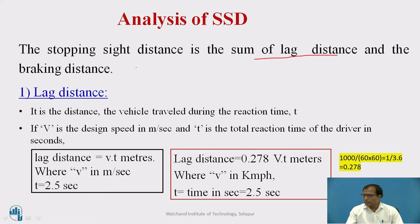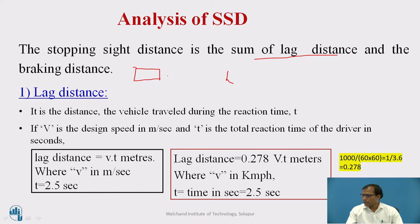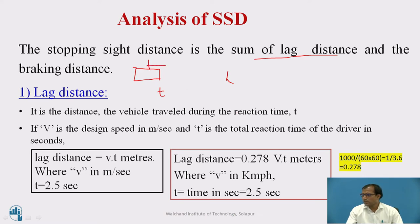Lag distance: when the vehicle is coming at a particular speed and the driver perceives an object — say an object is coming or a pedestrian is crossing — the time elapsed between perceiving the object and the start of braking is the reaction time of the driver. Whatever distance the driver travels during this reaction time t is called the lag distance. It is the distance the vehicle travels during the reaction time, where no action has yet been taken — just the thinking process. That distance is d1, or the lag distance.